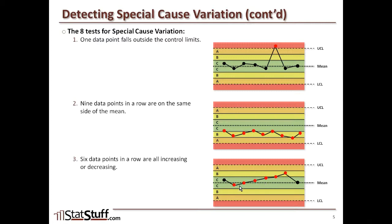If there are at least six consecutive observations all increasing or decreasing, something unexpected might be happening. We're not seeing the normal bouncing variation — the common cause variation — that we expect to see in the process.